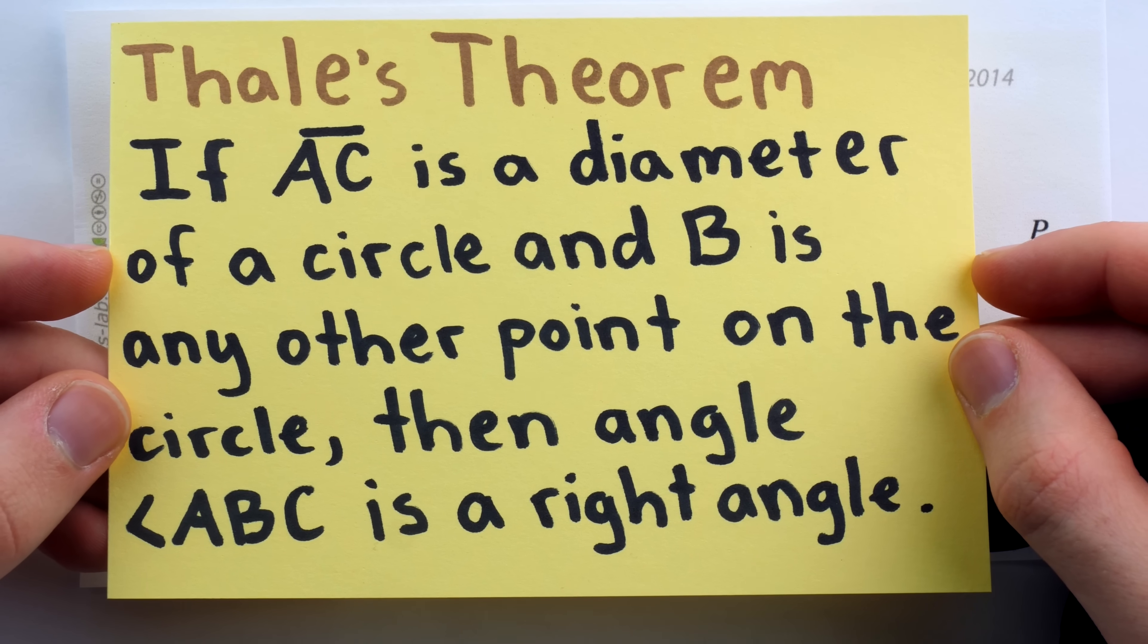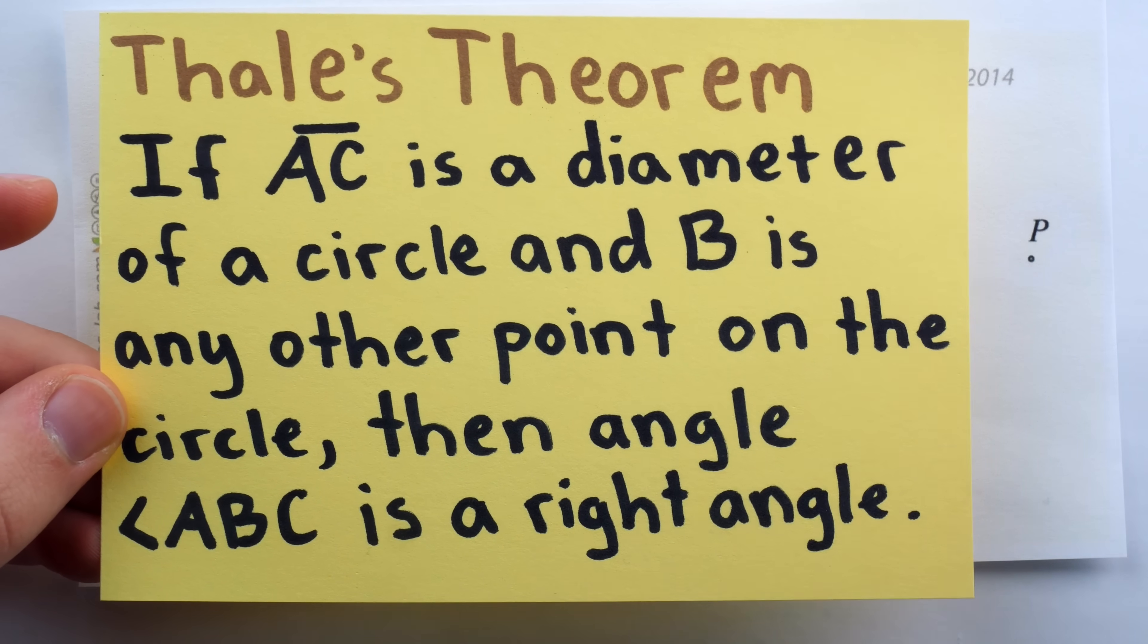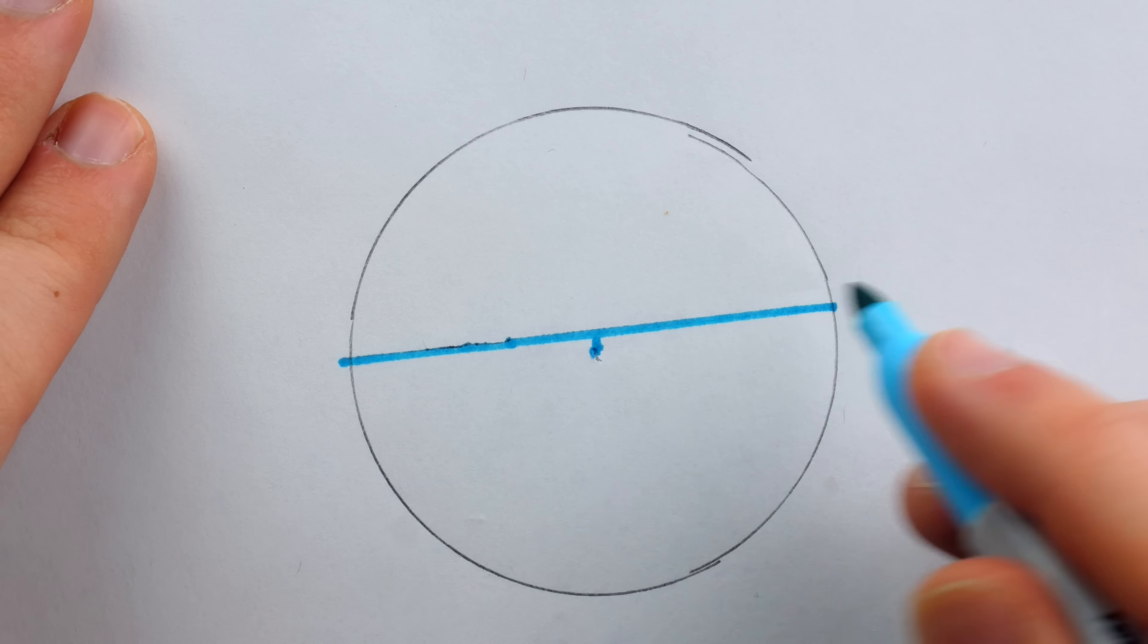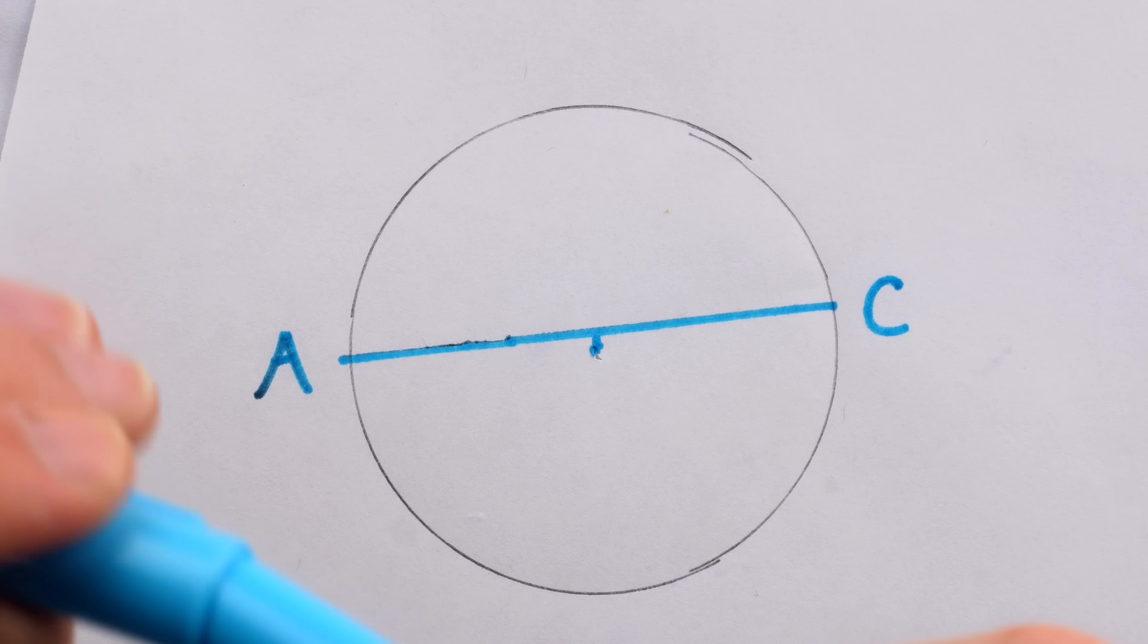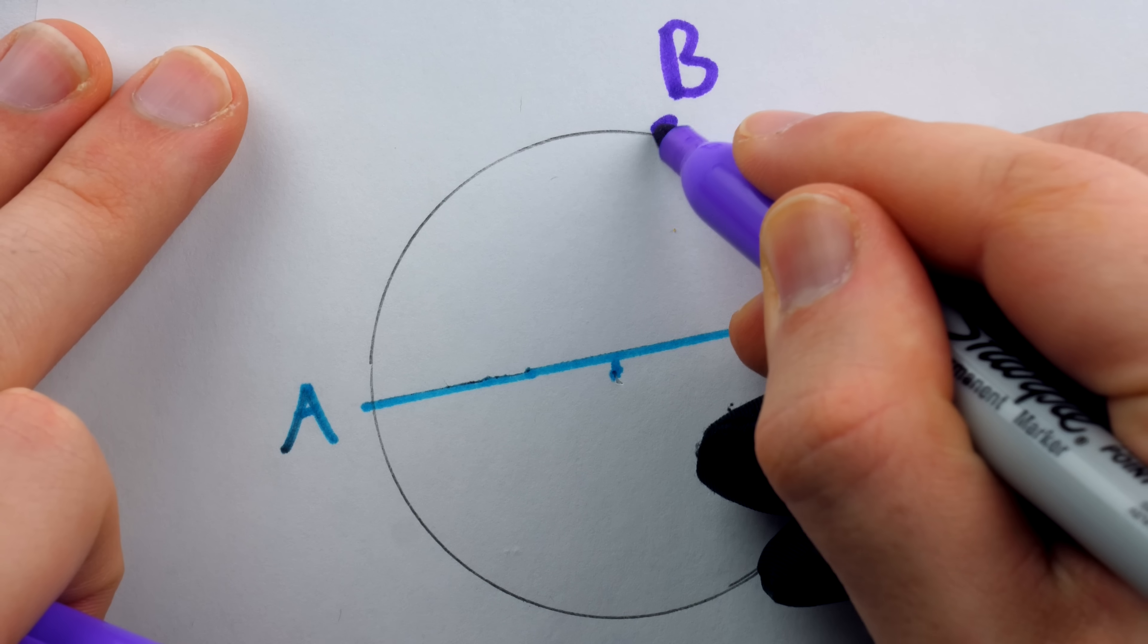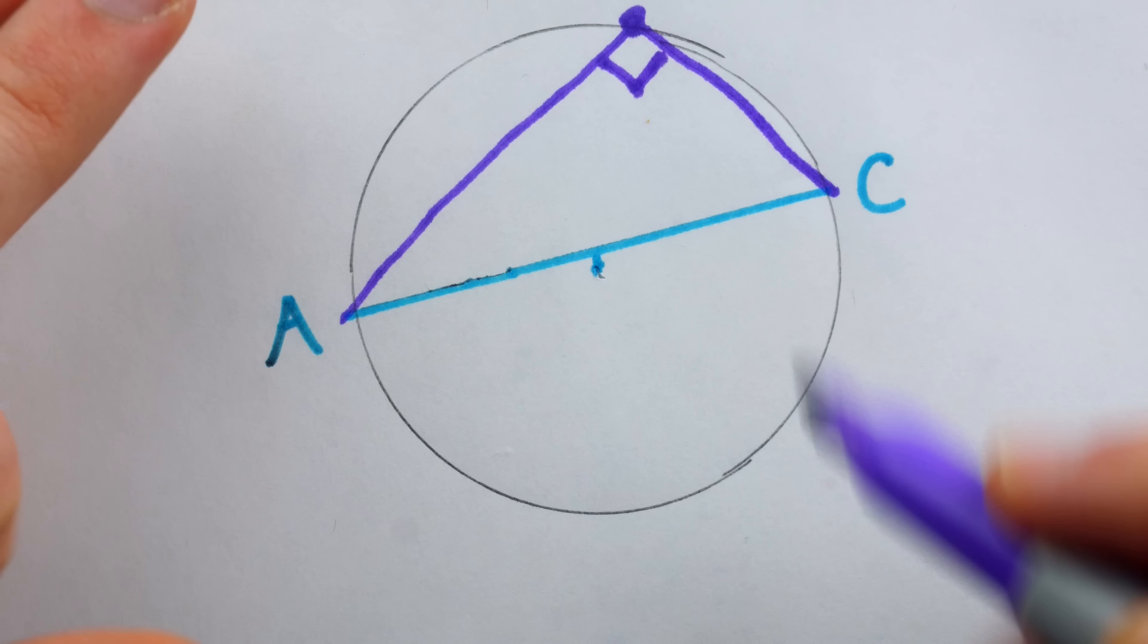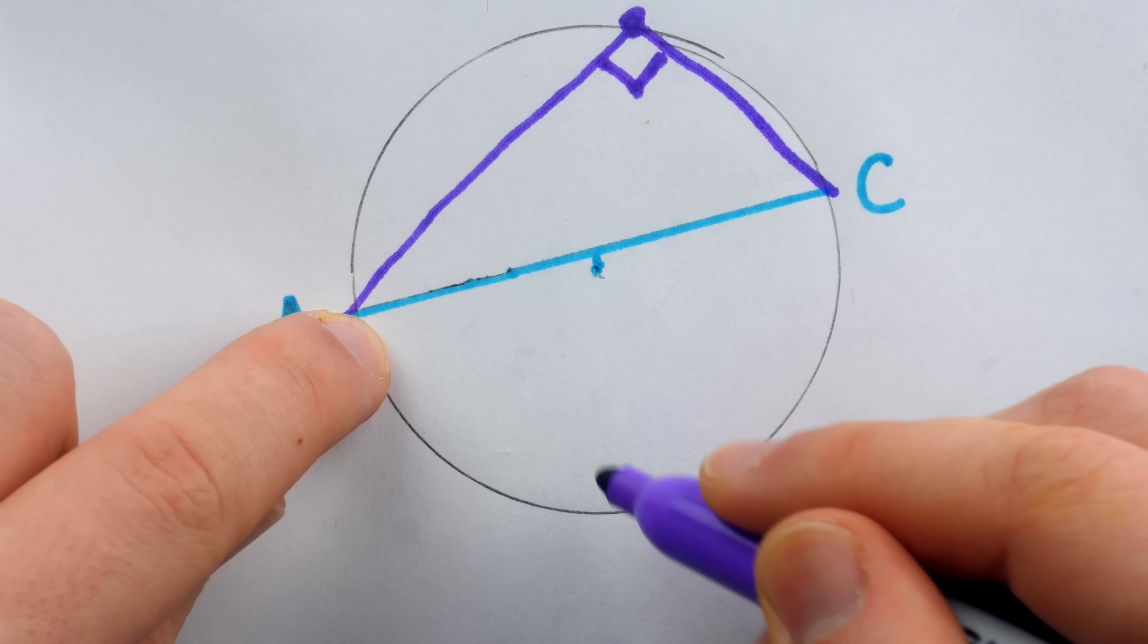The first is Thales' theorem. It says if AC is a diameter of a circle and B is any other point on the circle, then the angle ABC is a right angle. For example, here's a sketch of a circle and a diameter of the circle, which we could call AC. Thales' theorem tells us if we take any other point on this circle, say a point B, then that angle ABC is in fact a right angle. No matter where this point is on the circle, once you connect it to that diameter's endpoints, you're going to get a right angle.